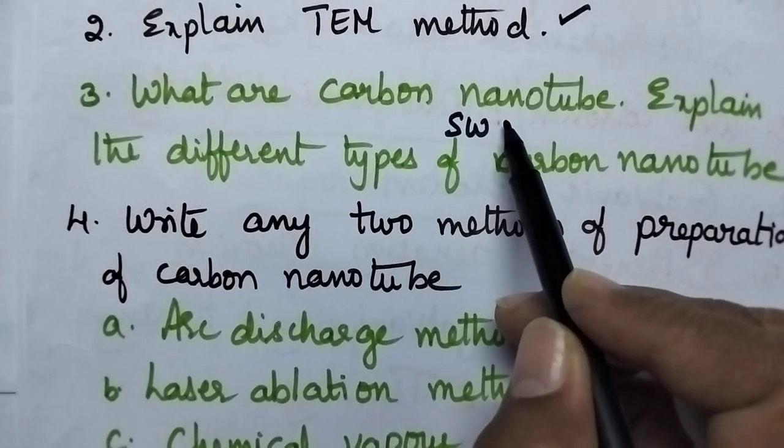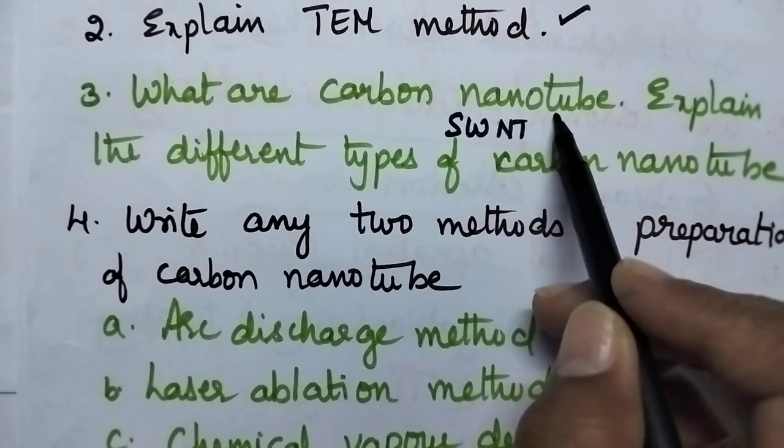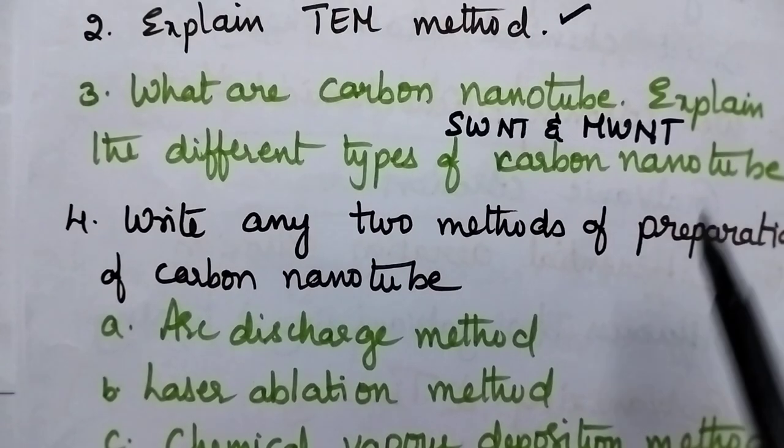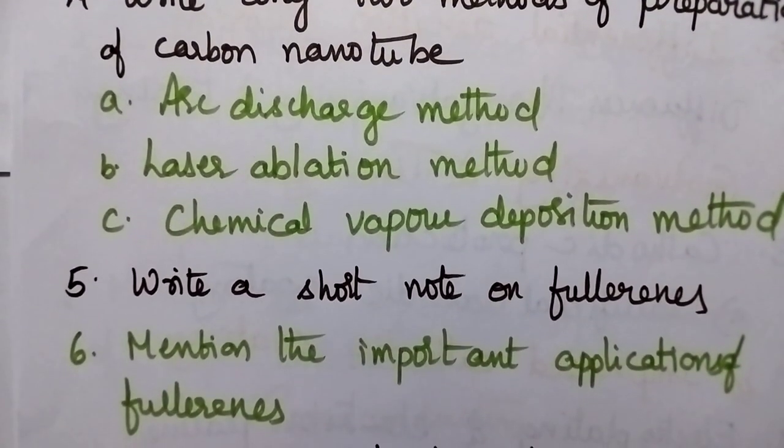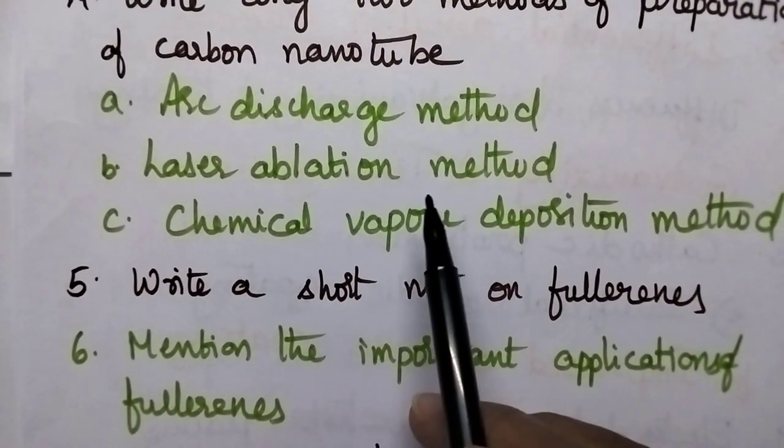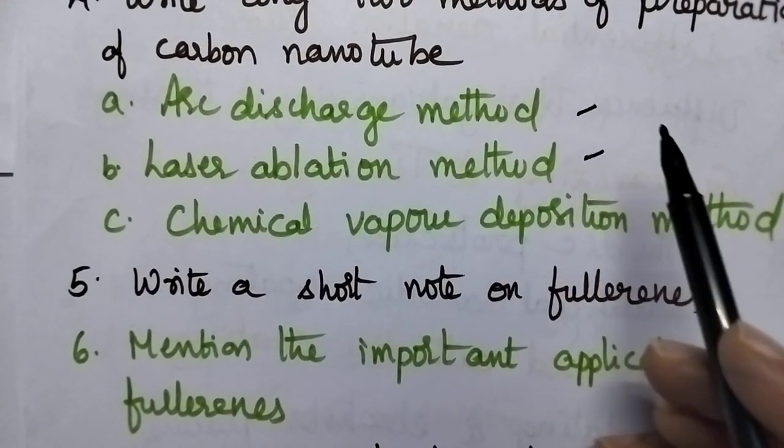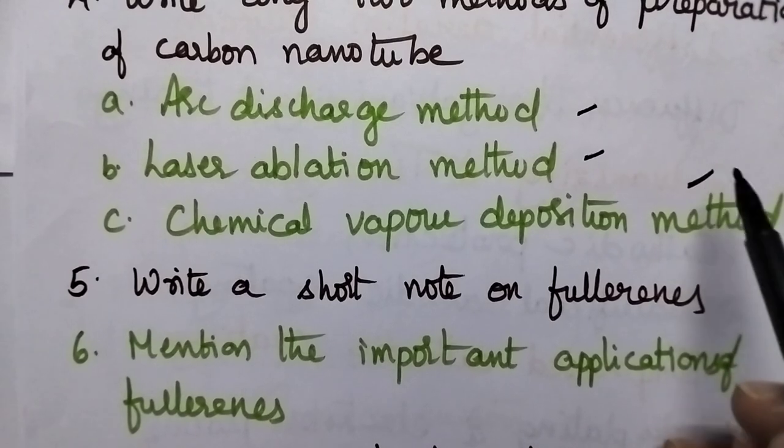carbon nanotubes, different types of carbon nanotubes especially single-walled carbon nanotubes and multi-walled carbon nanotubes. Any two methods of preparation of carbon nanotubes which generally includes arc discharge method, laser ablation method, chemical vapor deposition method,